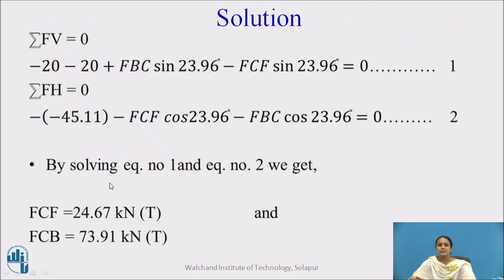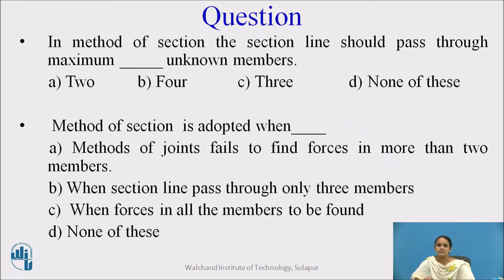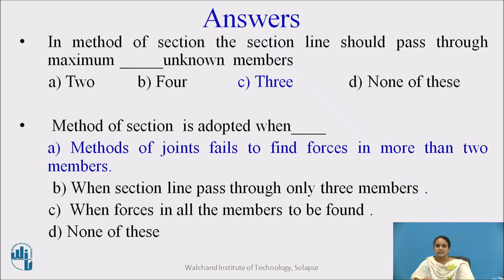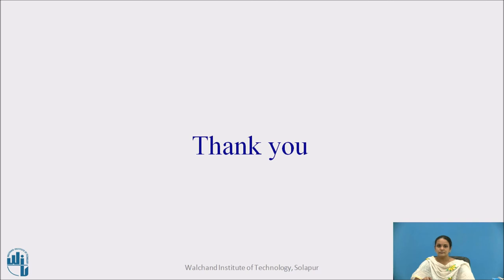Then, considering the joint equilibrium of joint C: ΣFy = 0 and ΣFx = 0 give two simultaneous equations. Solving these two equations gives the force in CF and the force in member CB. Likewise, you can find forces in a few members from the overall truss using the method of section. Pause this video and try to answer the practice questions. These are the answers and references considered for the study. Thank you.